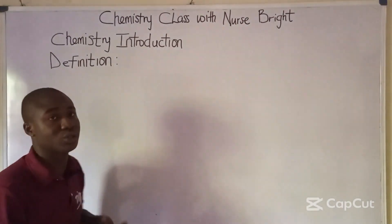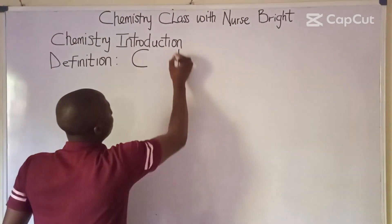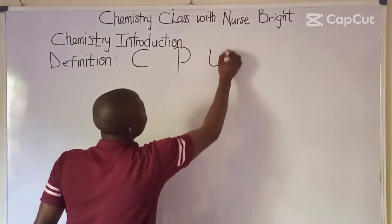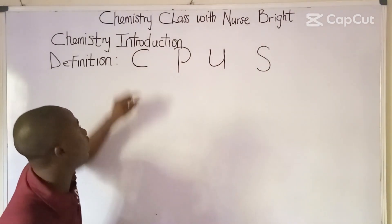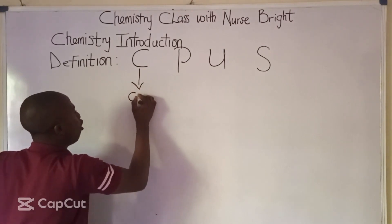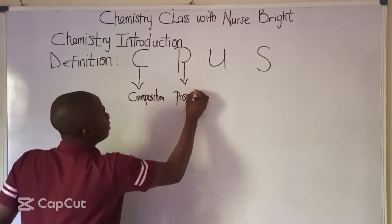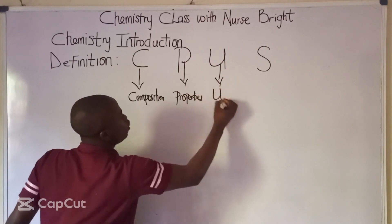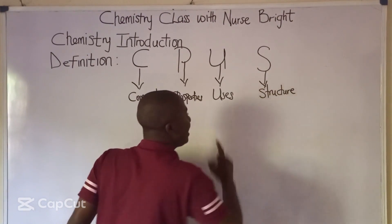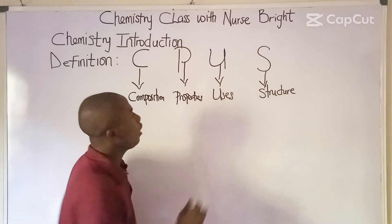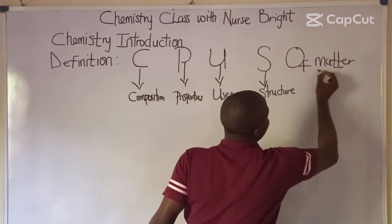Chemistry is simply the study of the composition, properties, uses, and structure of matter. So C here means composition, P here means properties, U here means uses, and the second C here means structure of matter. This must be noted about chemistry.